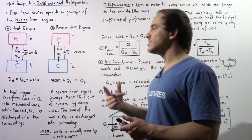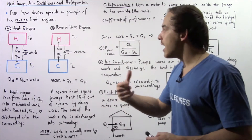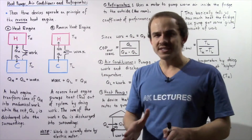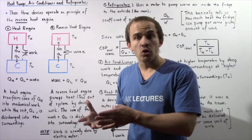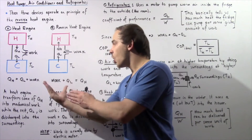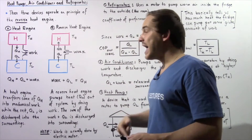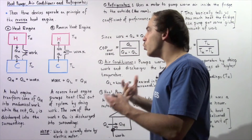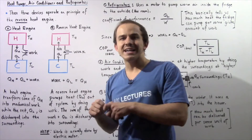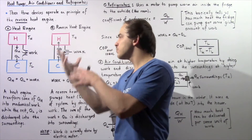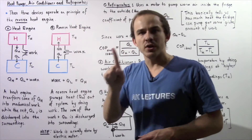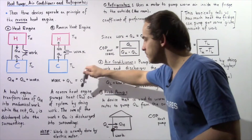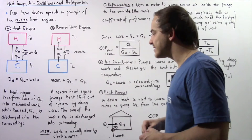The reverse heat engine is essentially the opposite — it operates on the opposite principle. Instead of transferring energy from a higher temperature to a lower temperature, in a reverse heat engine our entire goal is to transport energy from a lower temperature to a higher temperature. The way we accomplish that is by doing mechanical work. We input work and, as a result, we take a chunk of energy given by QL and transport it into the surroundings, which is at a higher temperature.